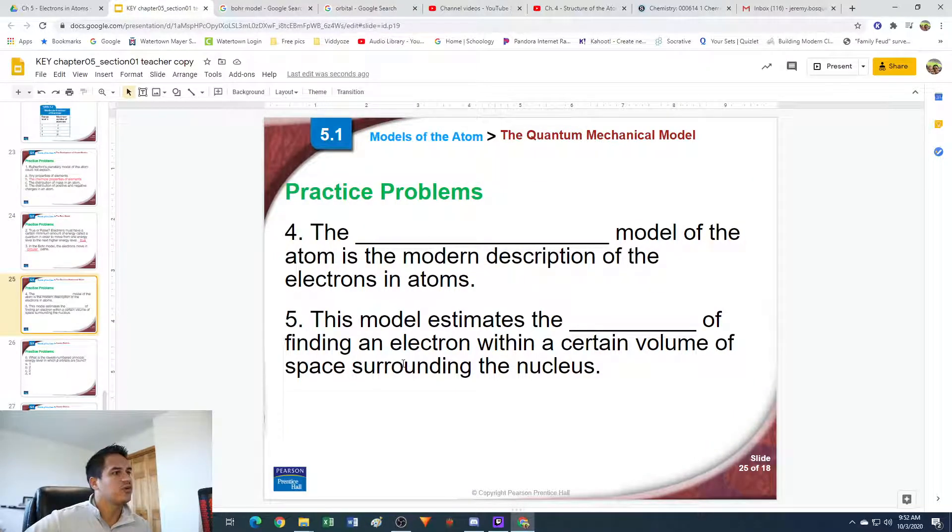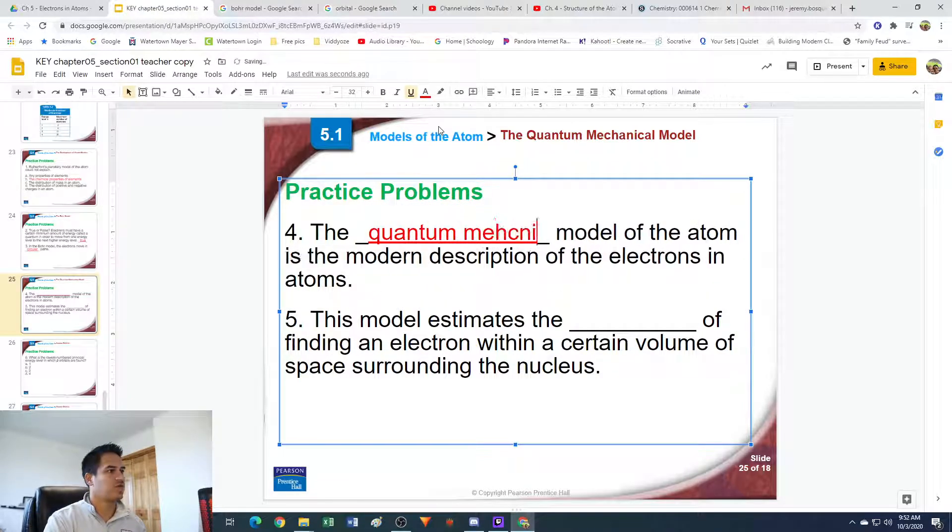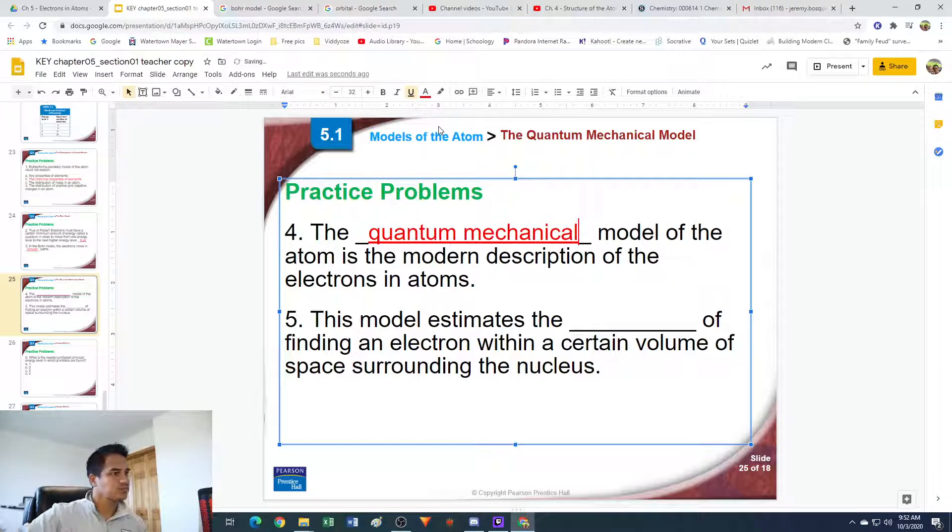Number four. The blank model of the atom is the modern description of the electrons in atoms. The model that we currently have today is known as the quantum mechanical model of the atom. That's the current modern day description.